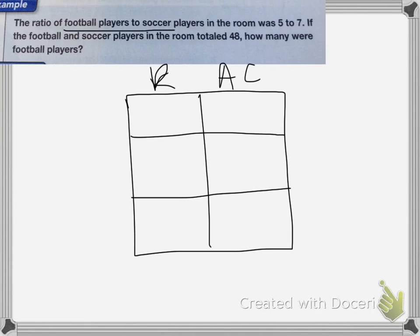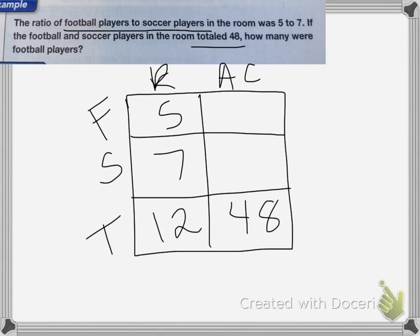It's ratio of football players to soccer players. So football players go on top, soccer players go in the middle, and my total is at the end. So it's 5 to 7, which means my total is going to be 5 plus 7, which is 12. And then they're totaled 48. So my actual count total will be 48.